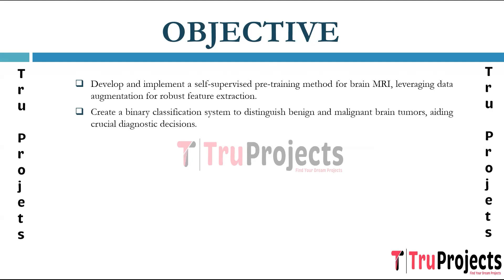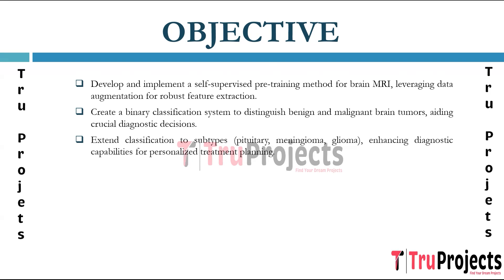The primary aim is to develop a robust binary classification system that accurately distinguishes between benign and malignant brain tumors. This involves training the model to recognize key features indicative of tumor malignancy, ultimately assisting in crucial diagnostic decisions for healthcare professionals. The project extends its focus to multi-class classification by categorizing brain tumors into specific subtypes — namely pituitary, meningioma, and glioma — providing detailed information vital for personalized treatment planning.